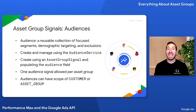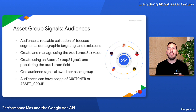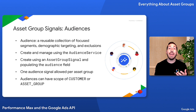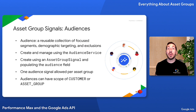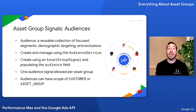If you have unique insights on which segments of users are more likely to convert, you can use audience signals to let Google know. An audience in Google Ads is a reusable collection of focus segments, demographic targeting, and exclusions. In the API, you can create and manage audiences using the audience service. Then you can create an audience signal by creating an asset group signal and populating the audience field with the audience resource name.